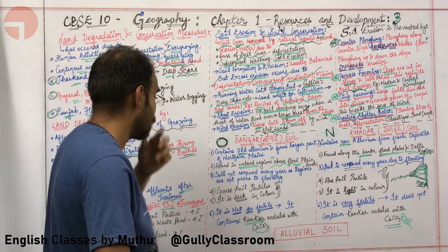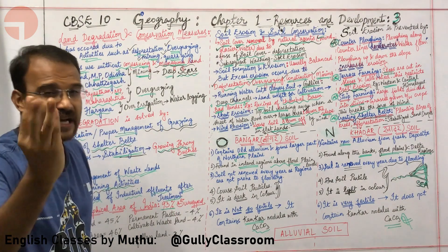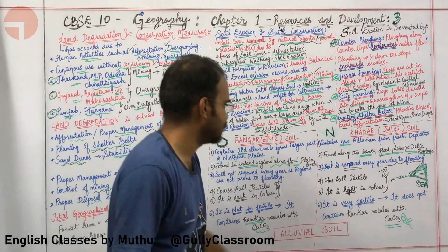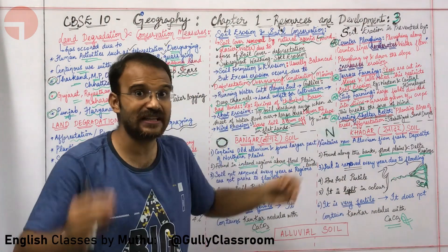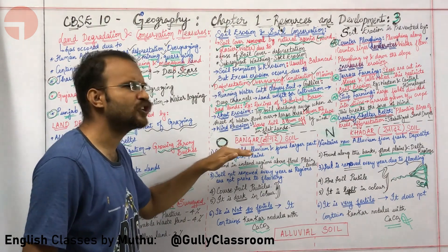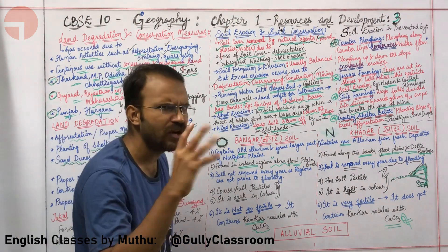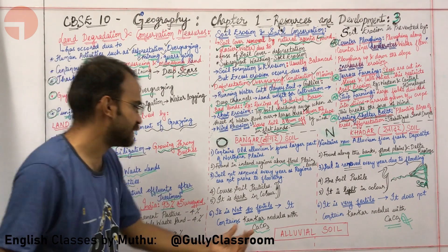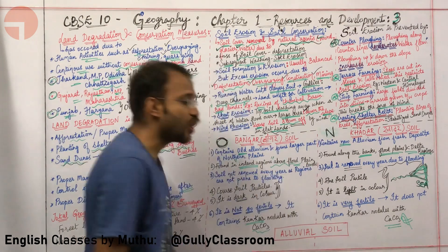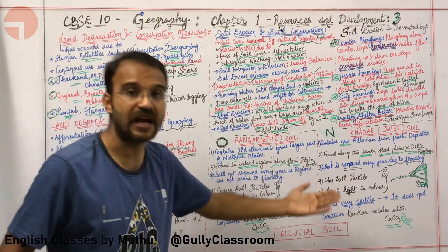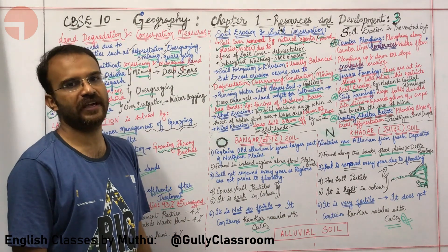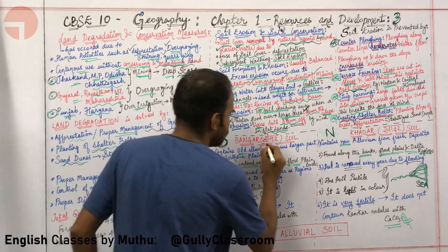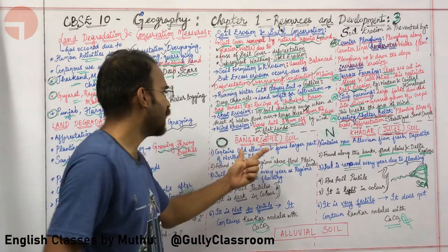Regarding characteristics: Bangar soil has coarse particles and is dark in color, while Khadar soil has fine particles and is light in color. In terms of fertility, Bangar soil is not always fertile because it contains concretions or kankar nodules — CaCO3 (calcium carbonate) particles. But Khadar soil is more fertile because it does not have these CaCO3 nodules. Bangar and Khadar are Hindi words, not English terms.